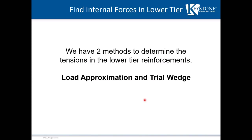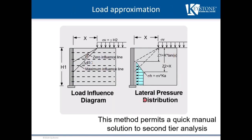Next, we need to apply the upper tier dead load surcharge to the lower tier and determine the tensions in the geogrid layers. We have two methods: a load approximation method and a trial wedge analysis method. The first method, load approximation, applies the dead load surcharge times Ka, the active earth pressure coefficient, fully below where the influence line intersects the back of the wall. Here's our one-to-one influence line and we're using the full pressure.